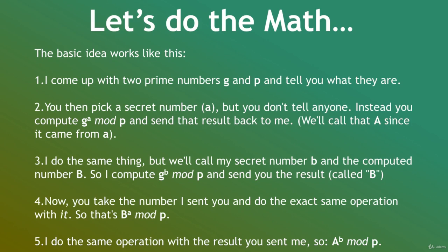The basic idea works like this. I come up with two prime numbers, g and p, and tell you what they are. You then pick a secret number, a, but you don't tell anyone. Instead, you compute g to the a, modulo p, and send that result back to me. We'll call that A since it came from a.